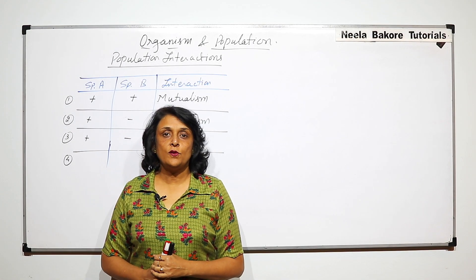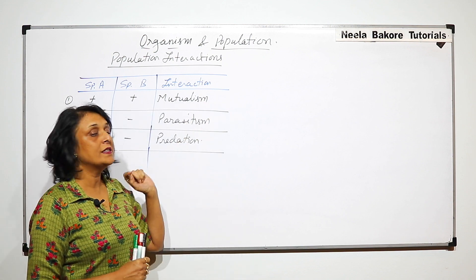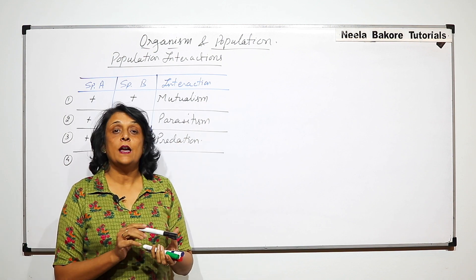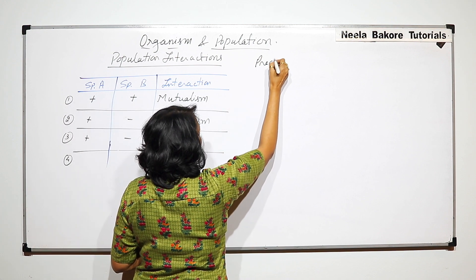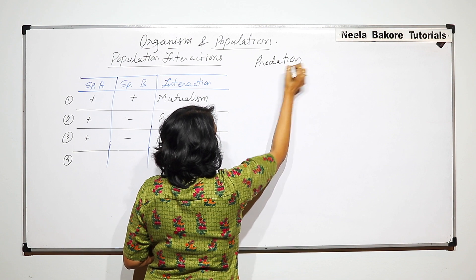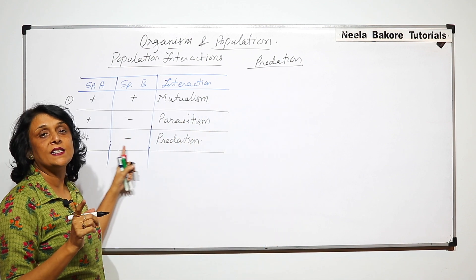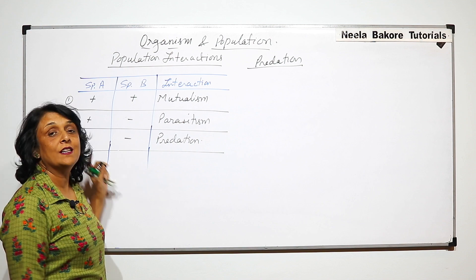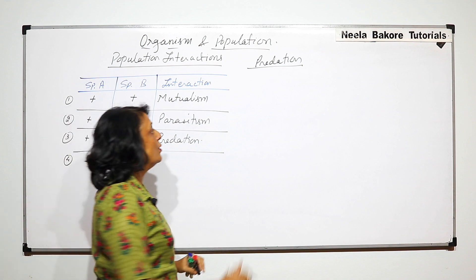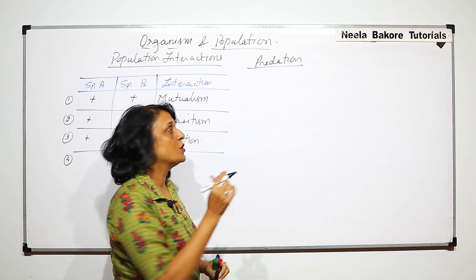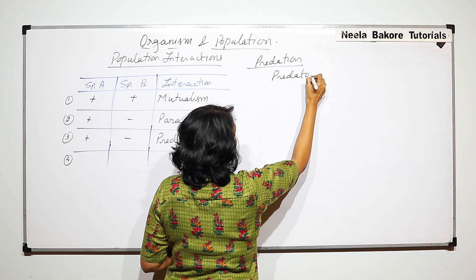Up till now we have talked of two population interactions: mutualism and parasitism. Now we will take up the third, that is predation, represented by one plus and one minus. That means one species is getting benefited and the other species is harmed.